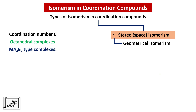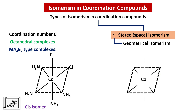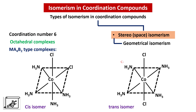Let us see the first type — MA4B2 type of octahedral complexes. In the cis isomer, the two chlorine atoms (the two B-type atoms) are on the same side: one atom on top and one in the square plane. In the trans isomer, the two chlorine atoms are on the opposite side. Another equivalent form of the trans isomer has the two chlorine atoms on the opposite side in the square plane. Remember these two trans forms are equivalent to each other.